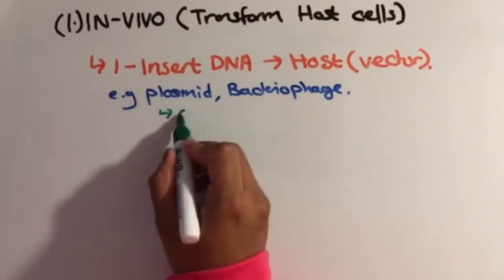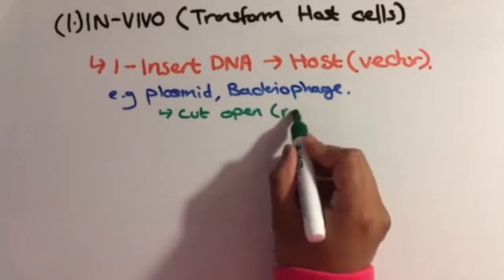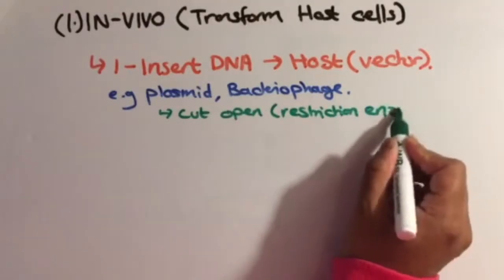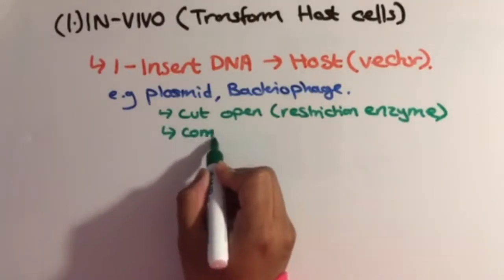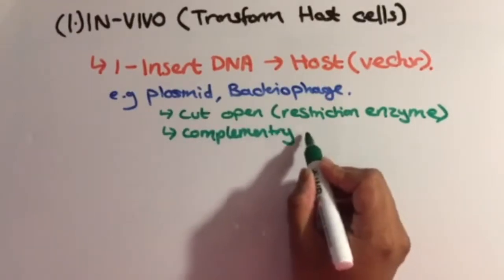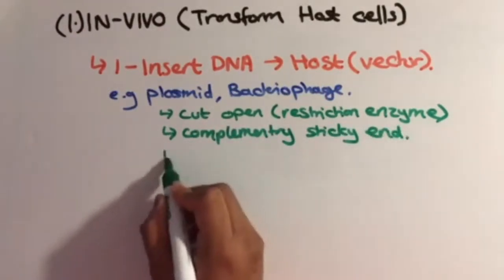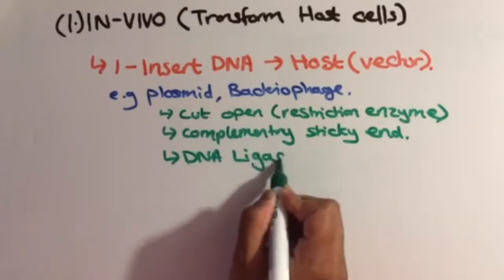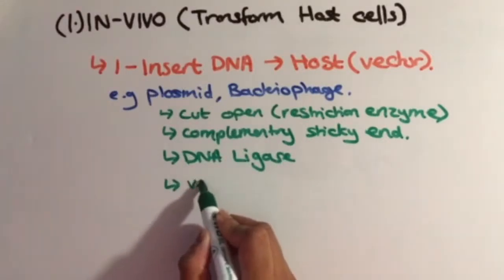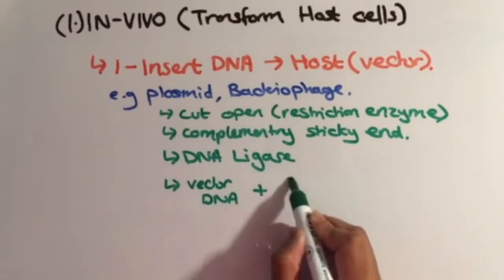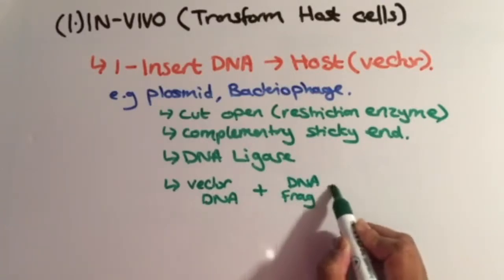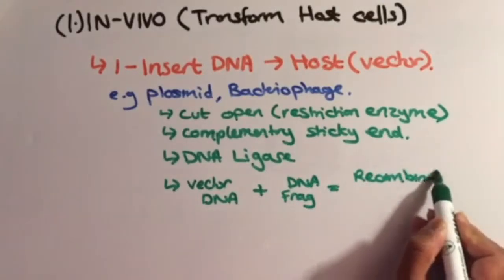The vector DNA is cut open using the same restriction endonuclease that was used to isolate the DNA fragment containing the target gene. This is so that complementary sticky ends are formed. The vector DNA and the DNA fragment are then mixed together via DNA ligase, and when this is combined, this is called recombinant DNA.